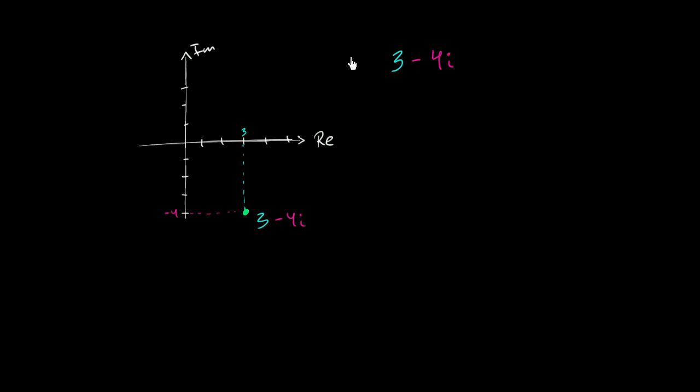Now what I want to think about is what the absolute value of 3 minus 4i is. Just as a reminder, absolute value literally means, whether we're talking about a complex number or a real number, the distance away from 0. So the absolute value of 3 minus 4i is going to be the distance between the origin on the complex plane and the point 3 minus 4i. This distance right here is the absolute value of 3 minus 4i.